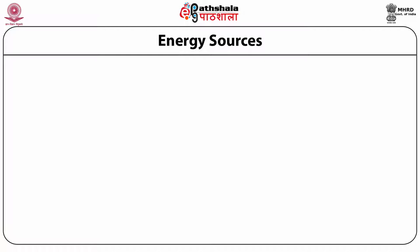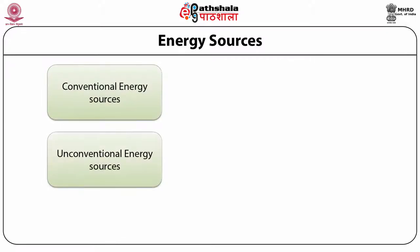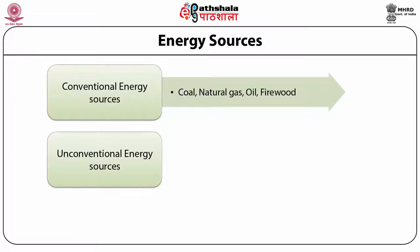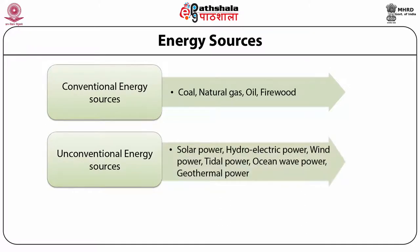There are two different sources of energy — the conventional energy sources and the unconventional energy sources. Conventional energy sources are those that are limited and finite, such as fossil fuels like coal, natural gas, oil, and firewood. In contrast, energy sources produced from renewable forms such as solar power, hydroelectric power, wind power, tidal power, ocean power, and geothermal power are categorized under unconventional sources of energy because these are renewable forms that can be produced in a sustainable manner.